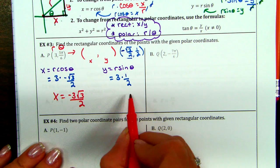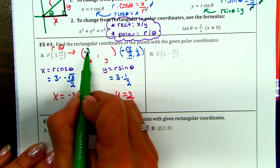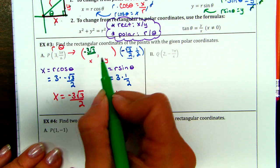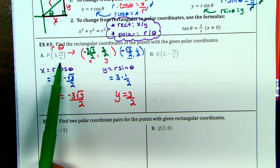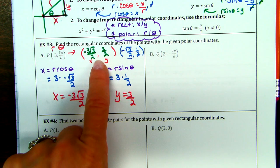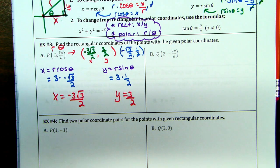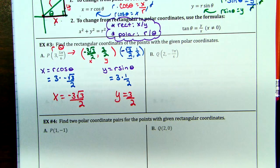Put it all together and there is your ordered pair. Something cool: if I graphed (3, 5 pi over 6) on a polar graph and graphed this x, y ordered pair on a regular rectangular graph and put them on top of each other, they'd be at the same exact place on their corresponding coordinate planes. They are in the same place in the four quadrants — just named differently and traveled to differently.